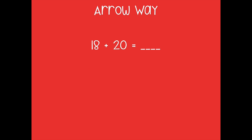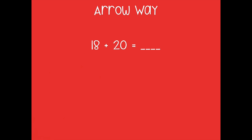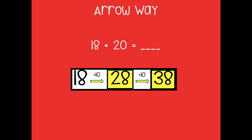For this one you're going to use the arrow way to add 18 plus 20. Pause the video, solve this problem, and then click play when you're ready to go over it together. Using the arrow way, we start with 18 and break that 20 into 10 and 10, because 10 plus 10 is 20. So 18 plus 10 gives me 28, plus 10 more gives me 38. So 18 plus 20 equals 38.